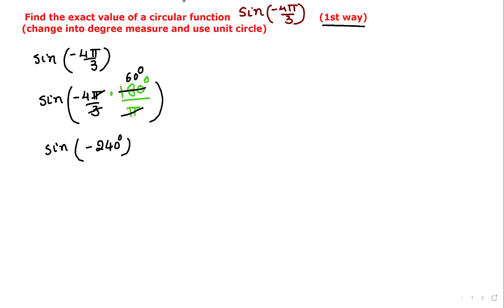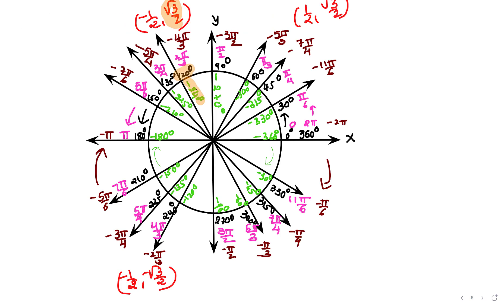We know that negative 240 degrees is coterminal with 120 degrees. Using the unit circle, that value is √3/2. So negative 240 degrees is coterminal with 120 degrees, and the value of sine(120°) or sine(-240°) is √3/2. This was our first method.